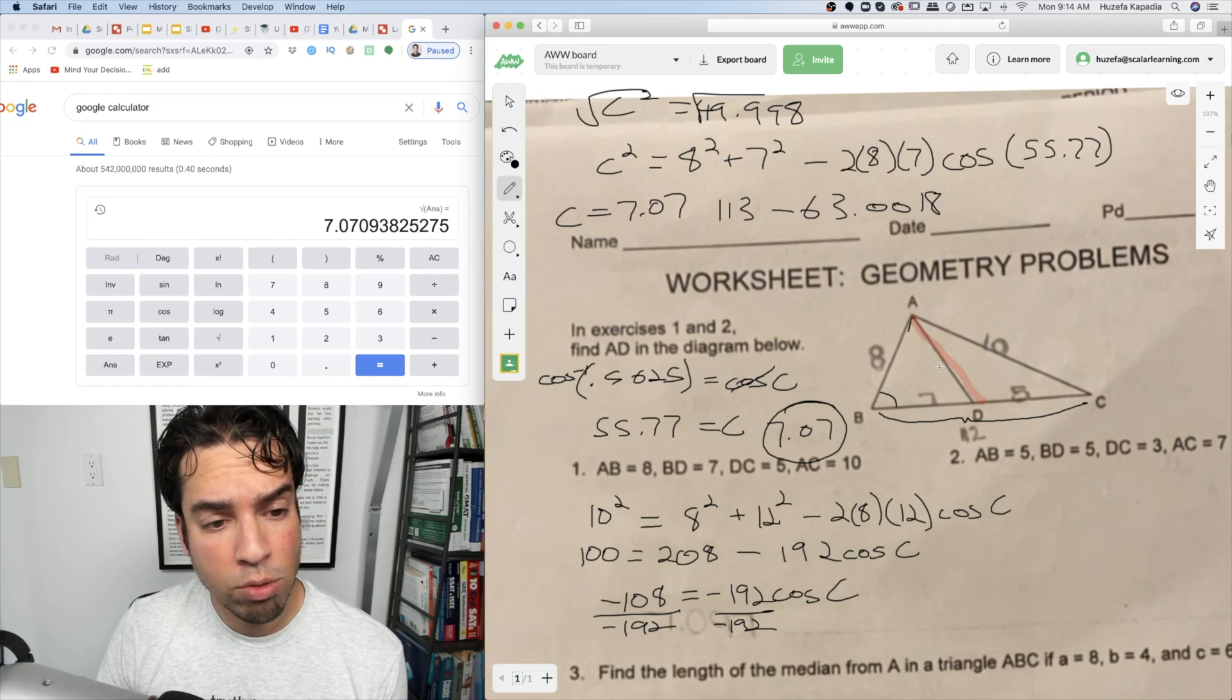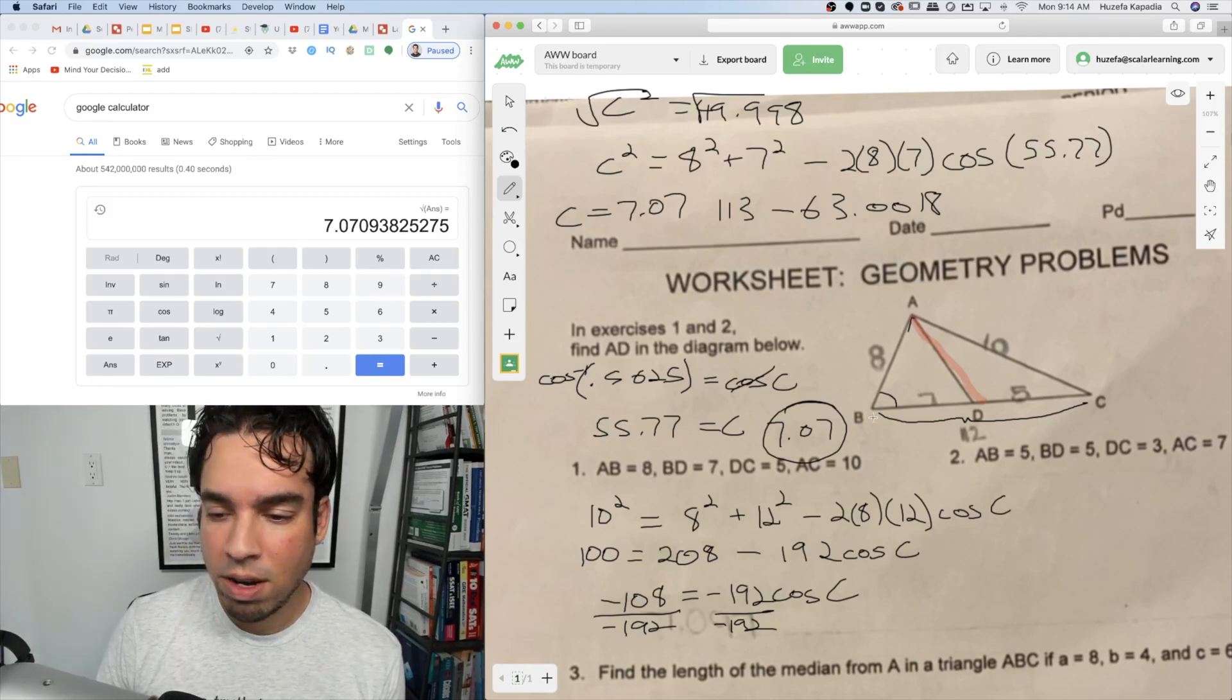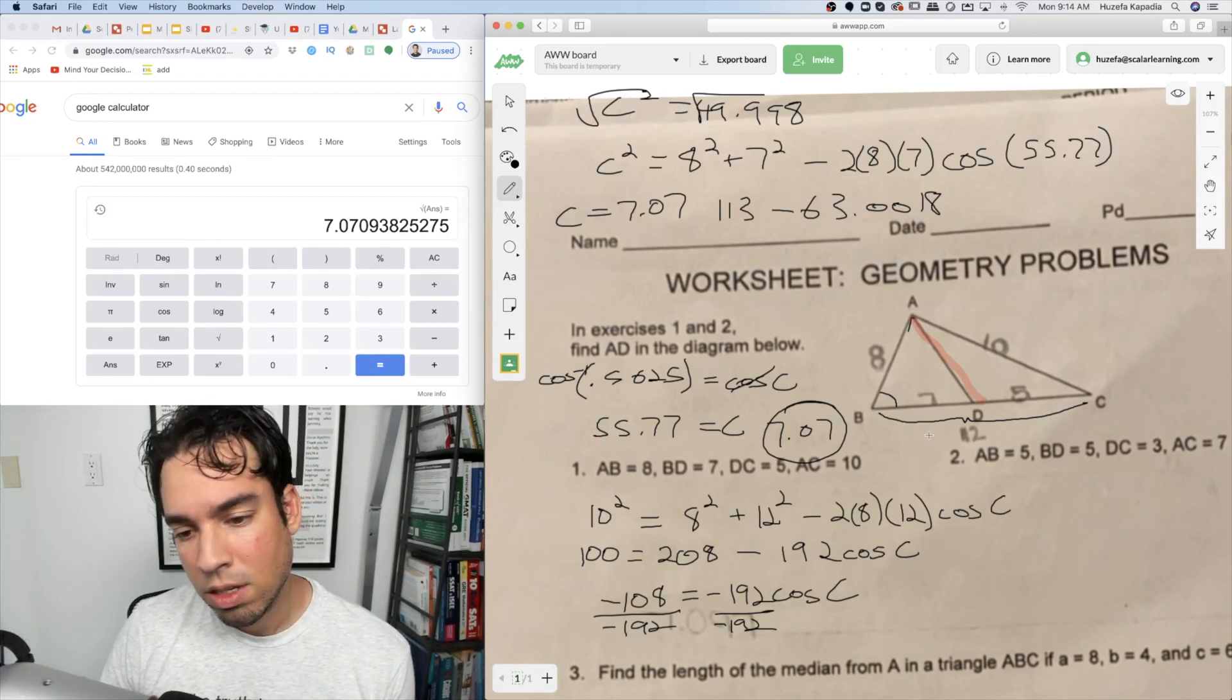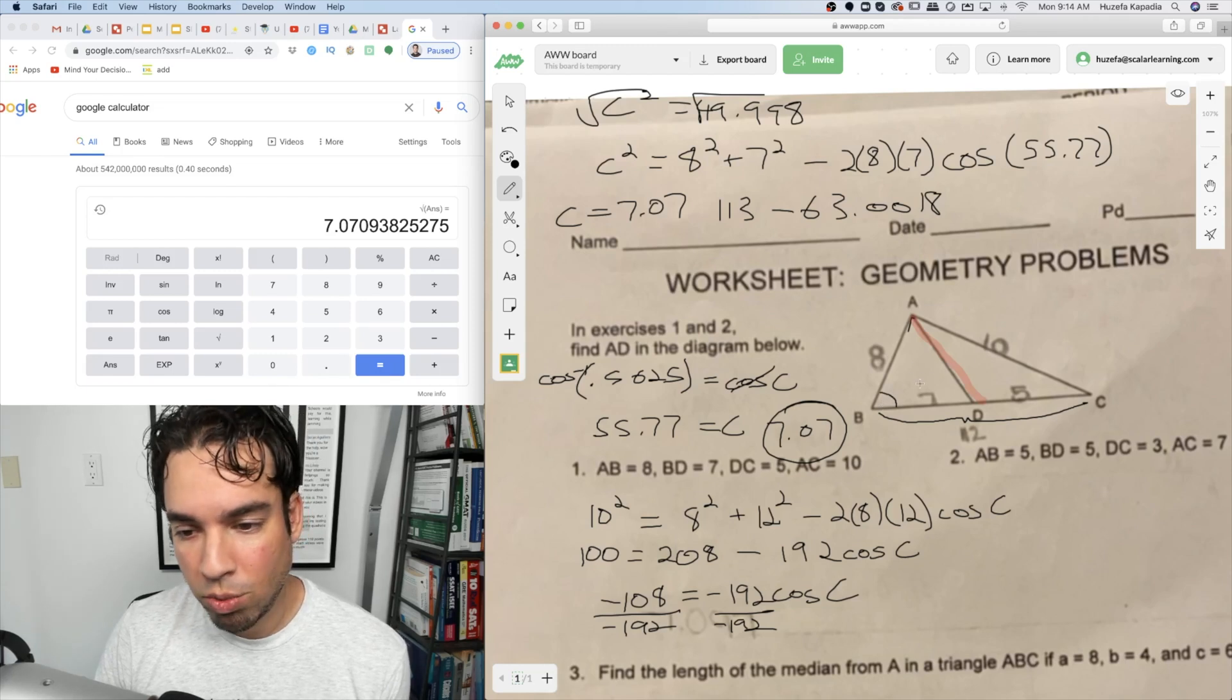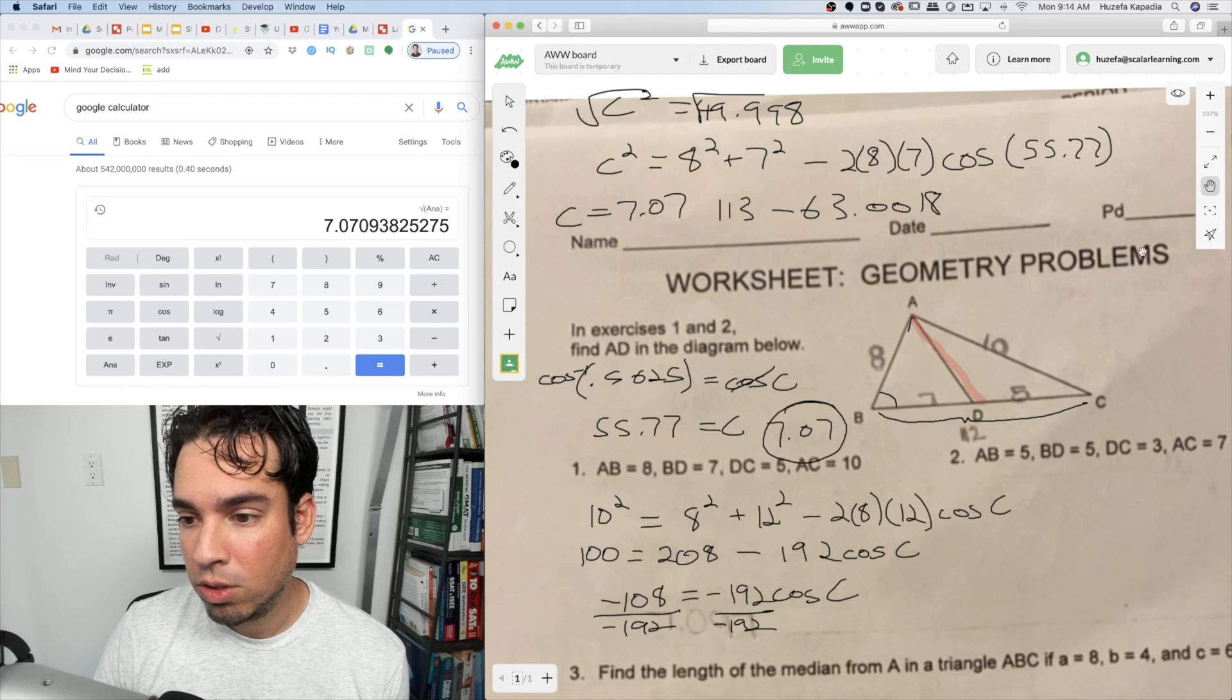So I got 64 plus 49. That's 113. And then it's going to be minus this whole quantity. So, 2 times 8 times 7 times cosine of 55.77. And then it's this minus 63.0018. So I'll just write 113 minus second answer. That C squared equals 49.998. So now last step, we've got to take the square root of both sides. Square root of second answer equals 7.07. So AD in this case, it's 7.07. And that's it. And that feels like an appropriate answer. This is 7, this is 8, this is 7.07. Yeah, I mean, I think that makes sense. It's also opposite of a 55.77 degree angle, which means, yeah, that also seems reasonable.